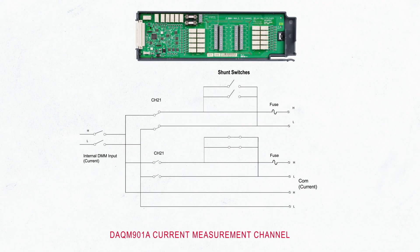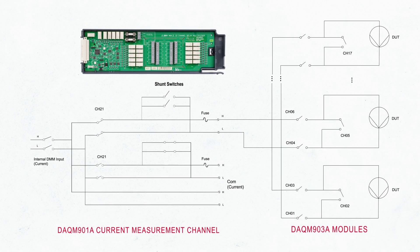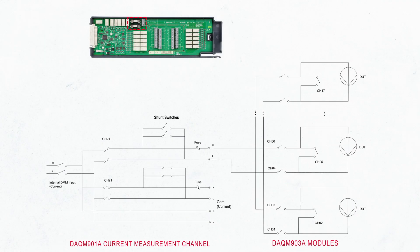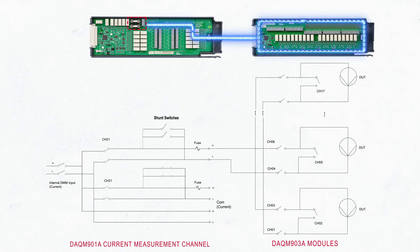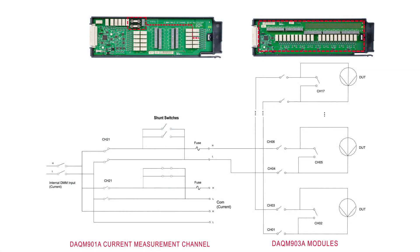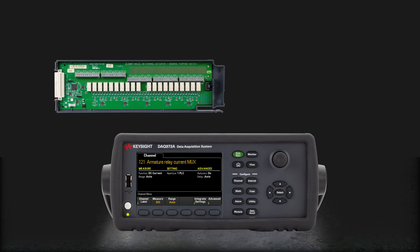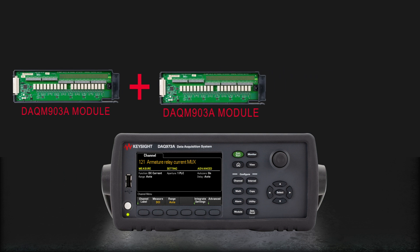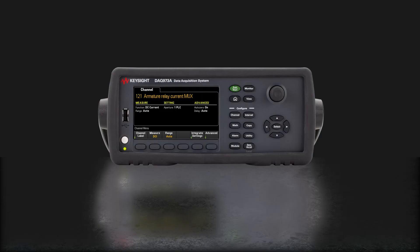This is the switch module the R&D engineer can use to expand the current measurement. From one DAQM901A current measurement channel, you can build a current measurement circuit up to 6 channels by using one DAQM903A module. Finally, the engineer can add another DAQM903A module to construct a total of 12 direct current measurement channels.